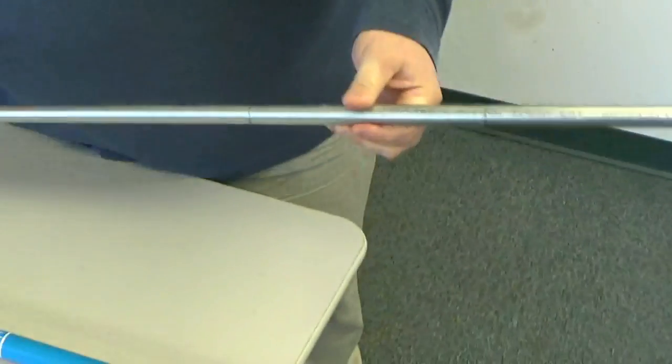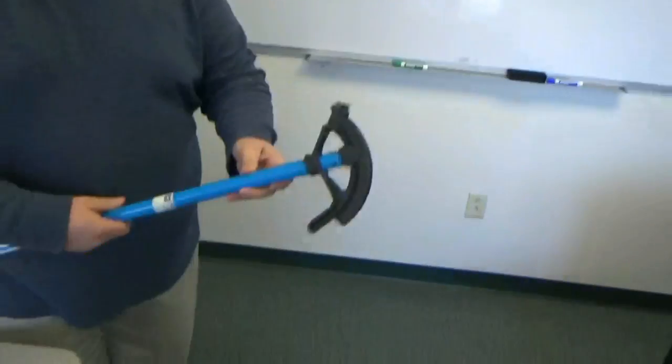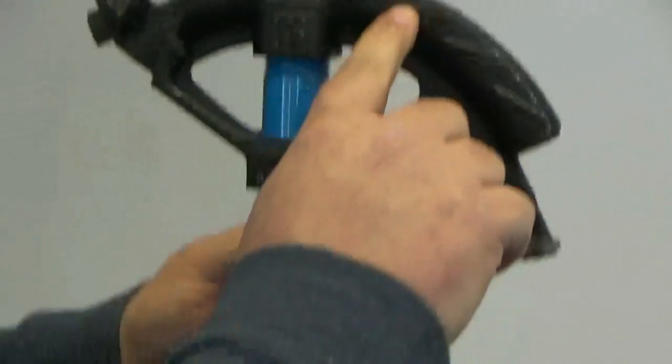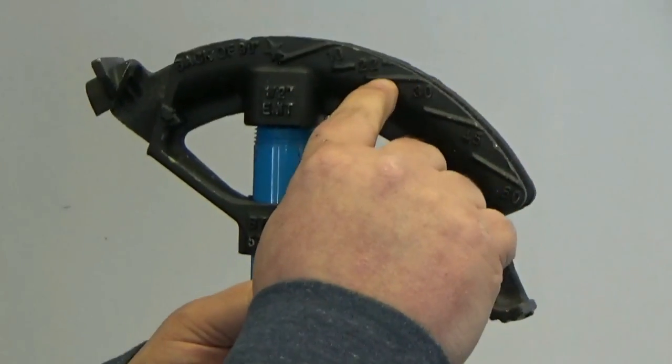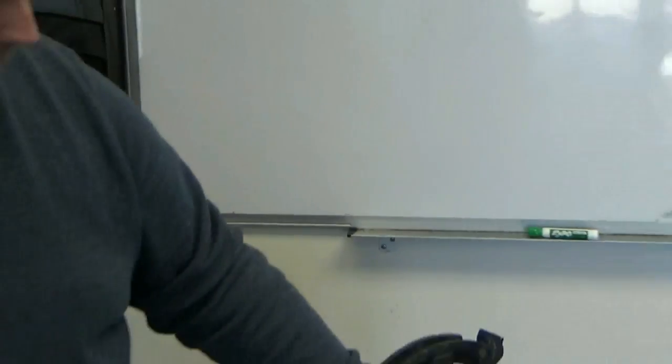Once we make our marks, we look at the bender. We're looking to do a 30 degree bend, so on our bender, we're looking to have the back of the pipe or the bottom of the pipe to be in line with this 30 degree mark.